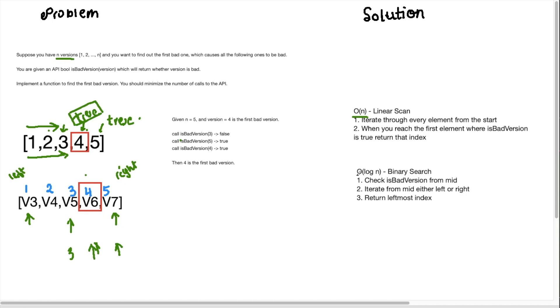So the time complexity for binary search is log n. And these are the three steps we need to implement in our solution. So we're going to check if the bad version is at the mid. So that's what we did here. And then we're going to iterate from the mid to either the left or right.